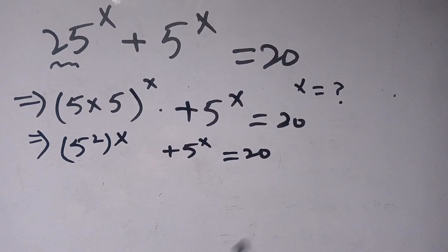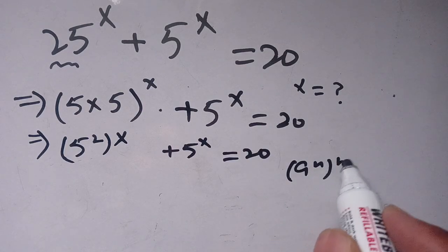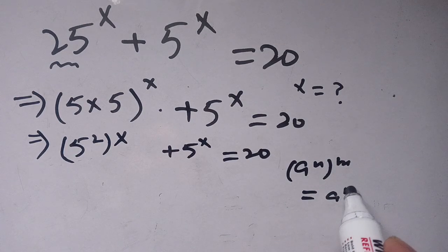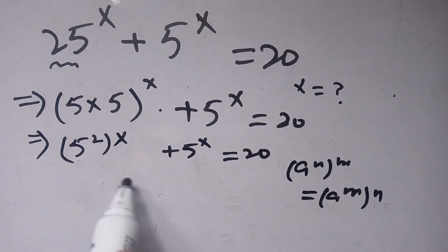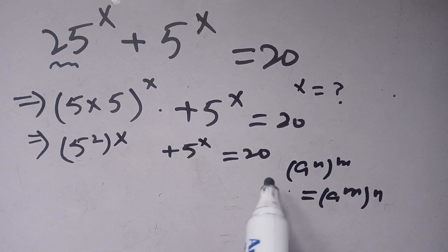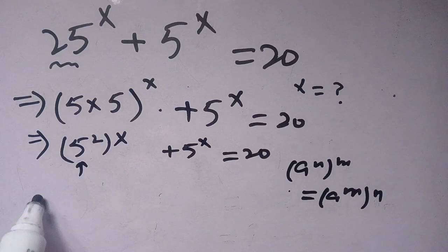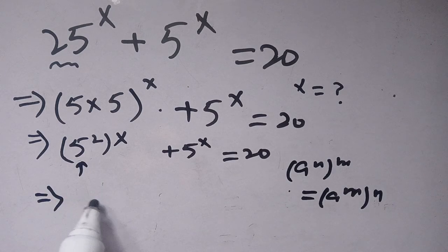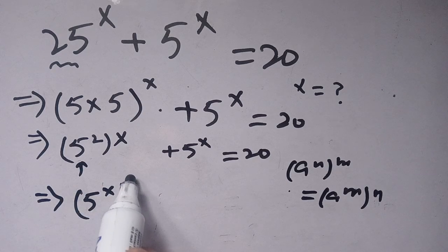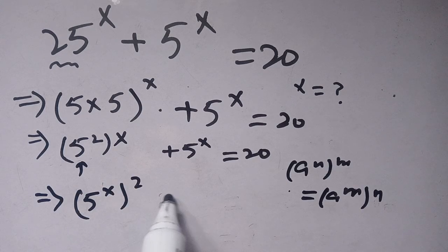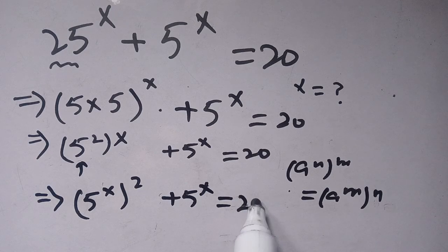Now we know that a power n, bracket power m, is the same as a power m, bracket power n. We use this identity and we get (5 power x) bracket power 2 plus 5 power x is equal to 20.